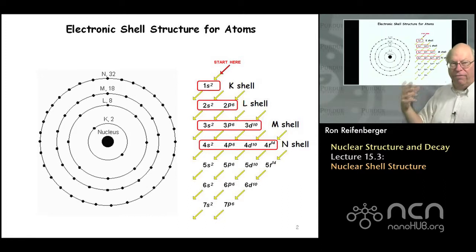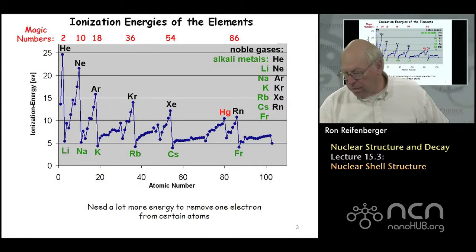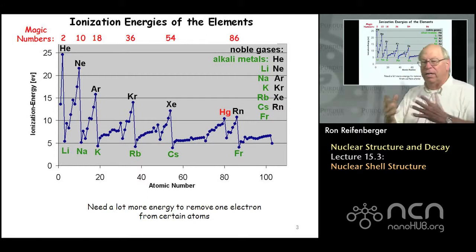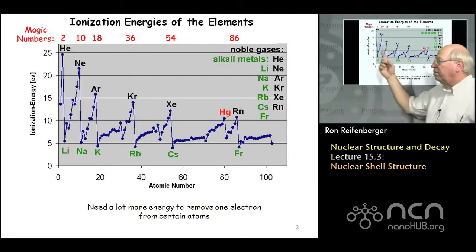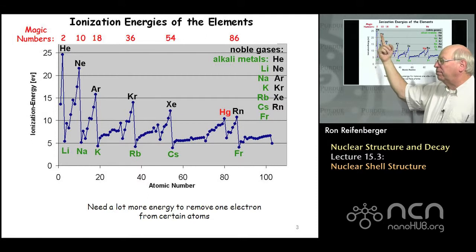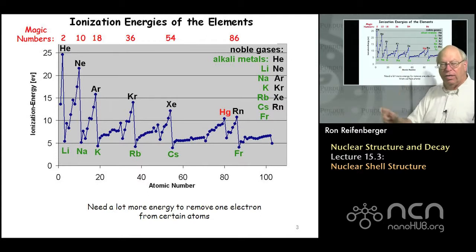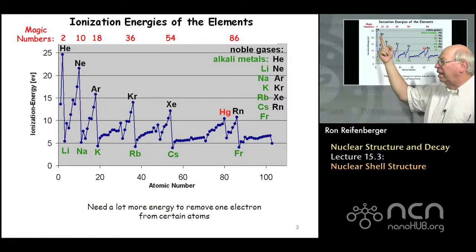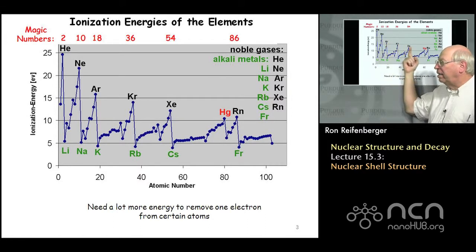How do these shells manifest themselves in nature? If you look at the stability of atoms — for instance, measuring the ionization energy of different atoms as a function of atomic number — you find that some atoms are extremely stable. In particular, the helium, neon, argon, krypton, xenon, and radon sequence of elements, which comprise the inert gas elements, have relatively high ionization energies compared to the elements just adjacent to them.